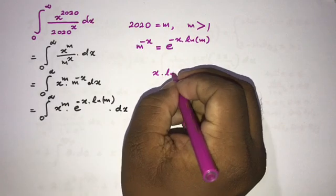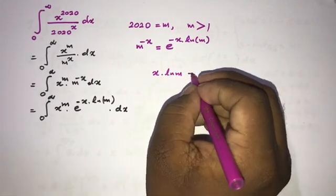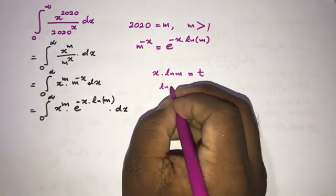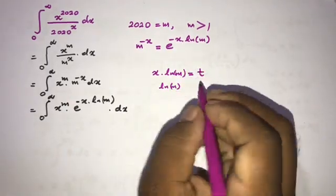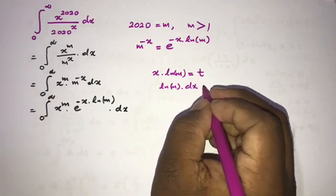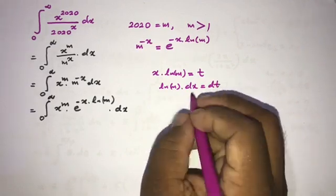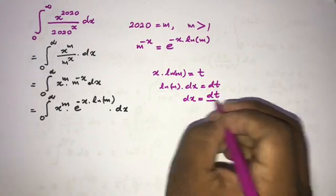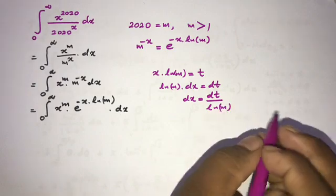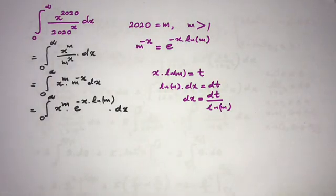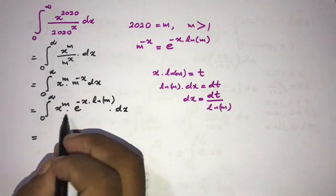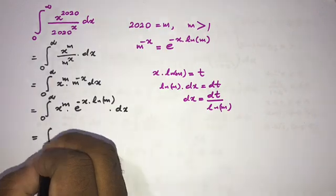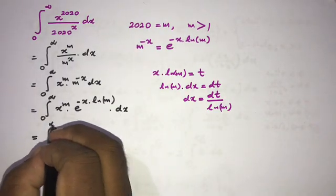Now we can use the substitution method. If we let t equal x times the natural log of m, then differentiating — since natural log of m is a constant — we get natural log of m times dx equals dt, so dx equals dt over natural log of m.